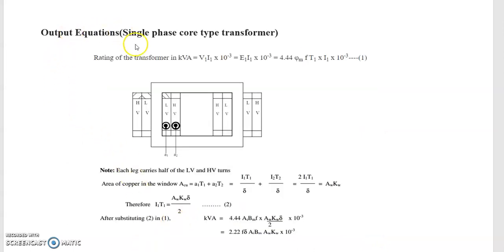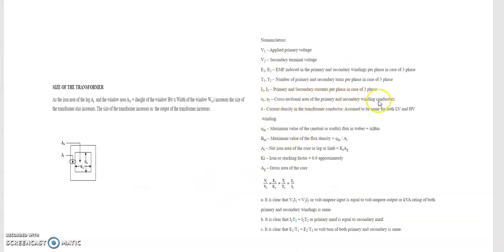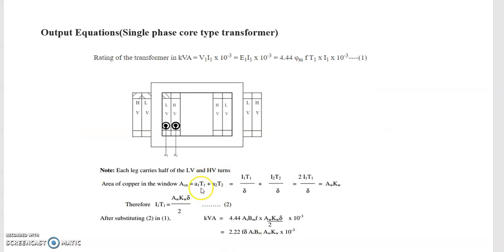We need to calculate the output equations for both single phase first and then three phase transformer. For the core type single phase, the KVA rating of the transformer is given as E1·I1 × 10⁻³. We have already derived the EMF equation. The area of copper A1 is the cross-sectional area of the primary conductor, so A1·T1 gives the copper area for primary turns. A2 is the cross-sectional area of the secondary and T2 is the number of turns of the secondary.